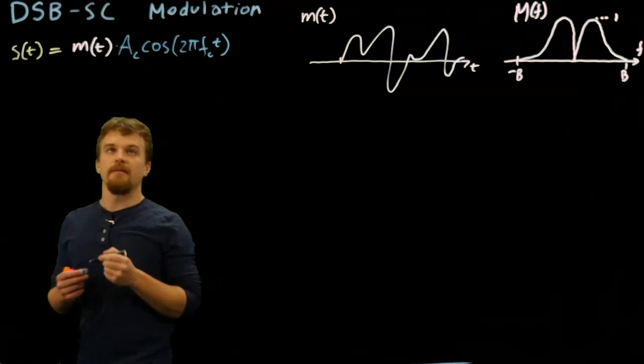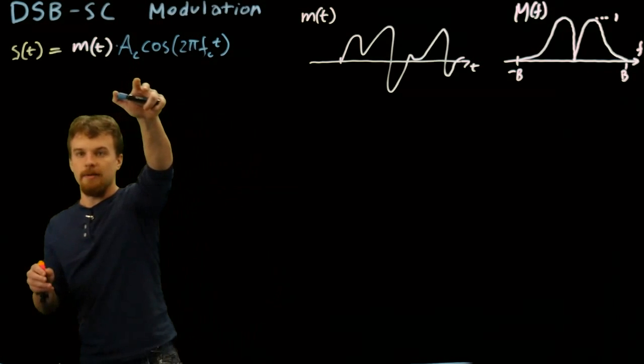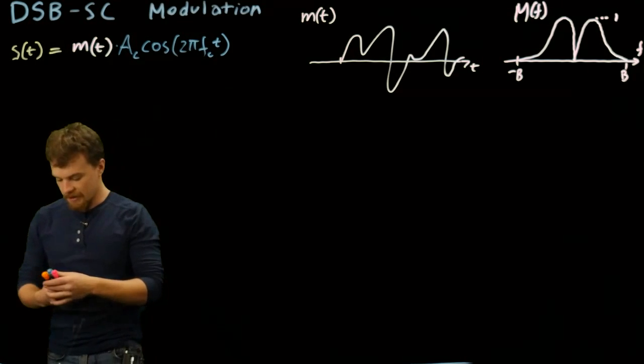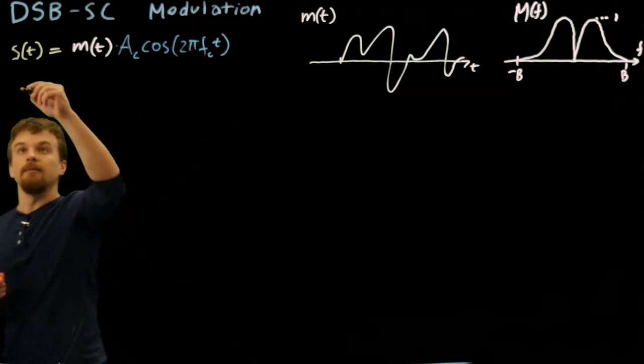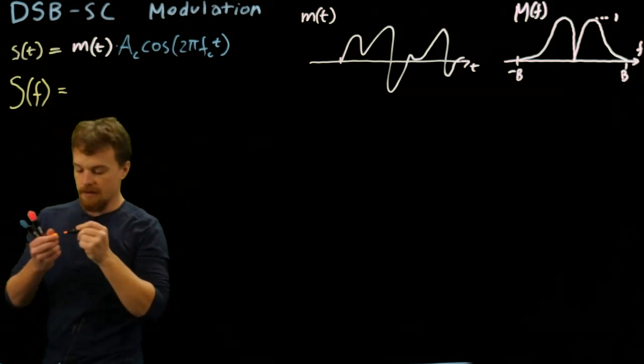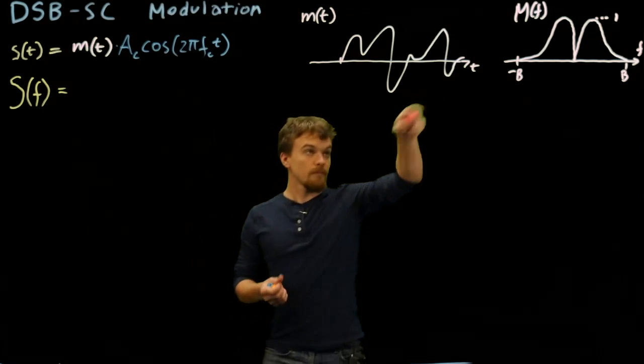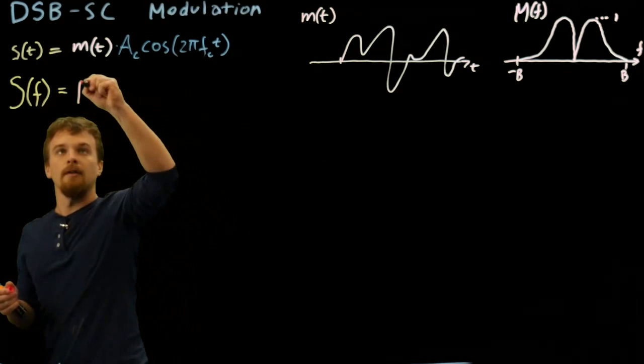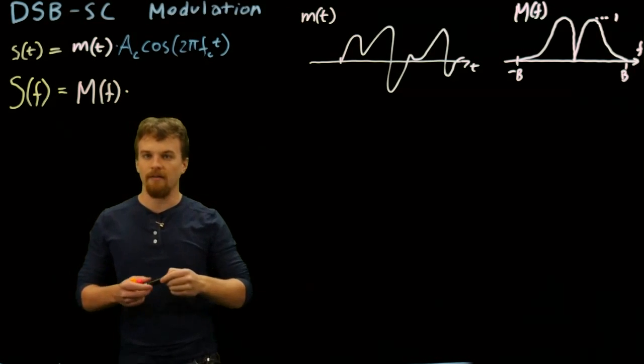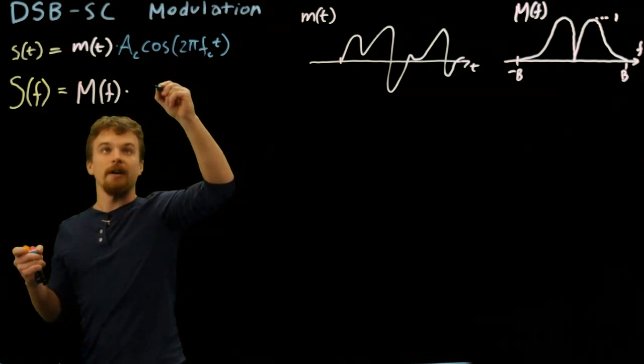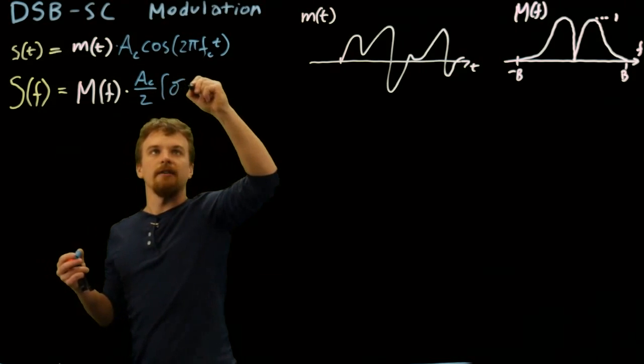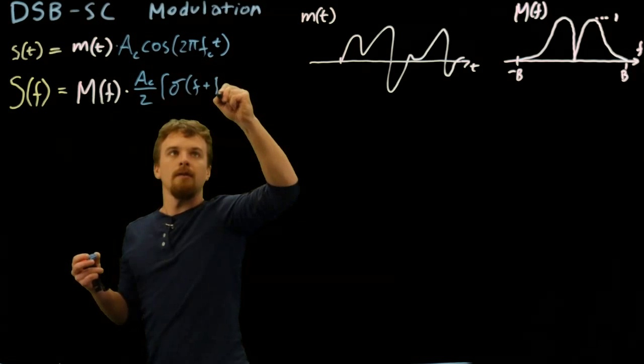We saw in our modulation video that this multiplication in time actually convolves the two values in frequency. The Fourier transform of this signal that we're sending is going to be equal to the Fourier transform of our message convolved by the Fourier transform of Ac cosine, which ends up being Ac over 2 times delta functions at our carrier frequency.